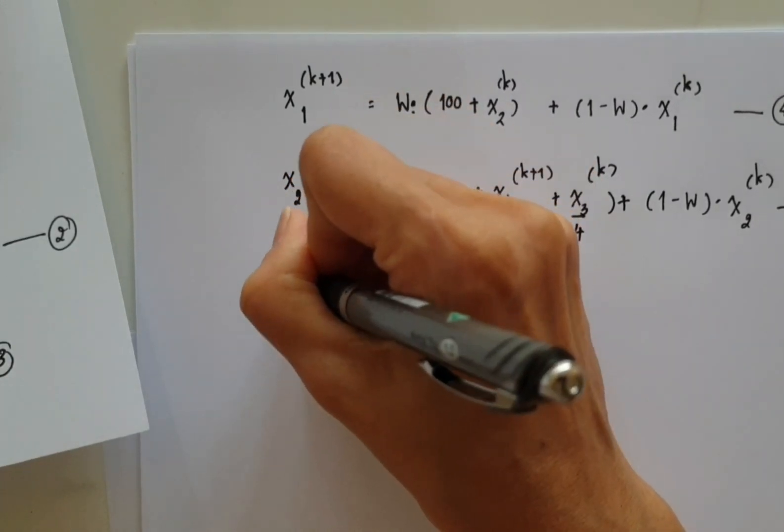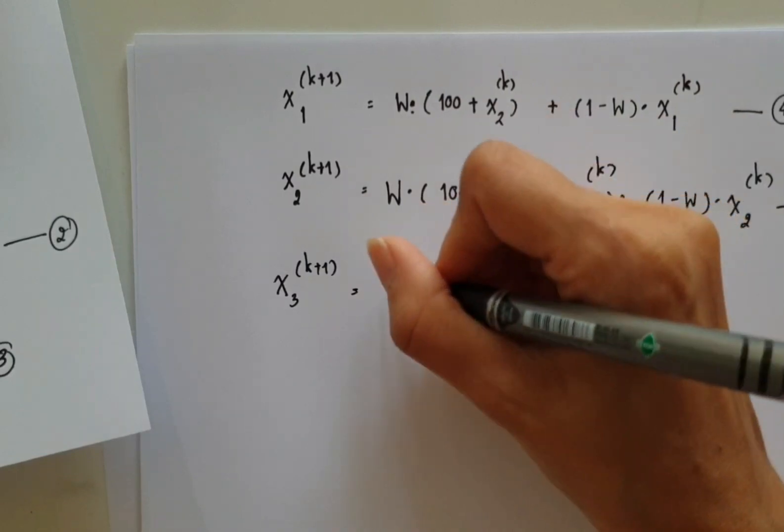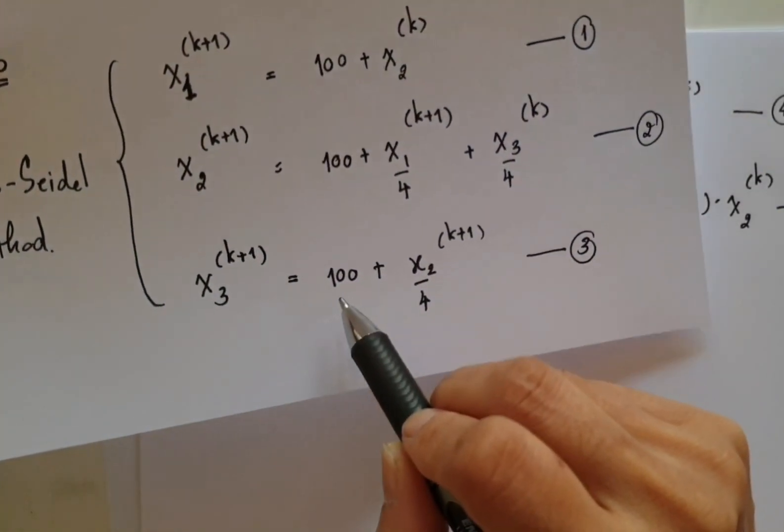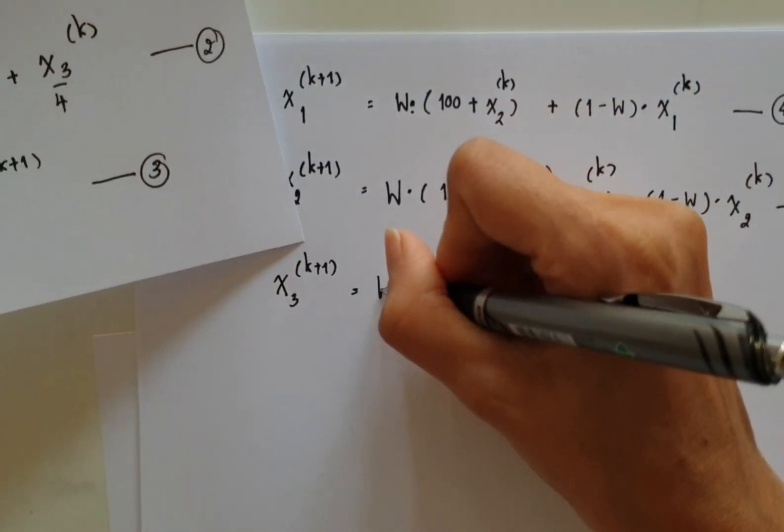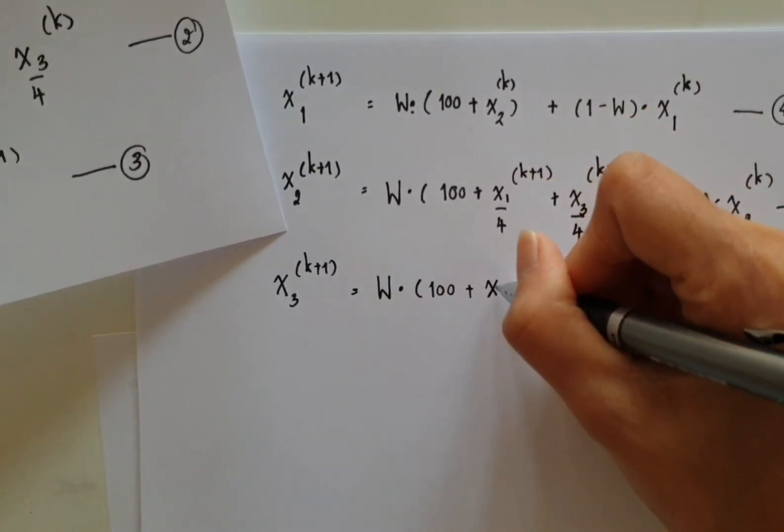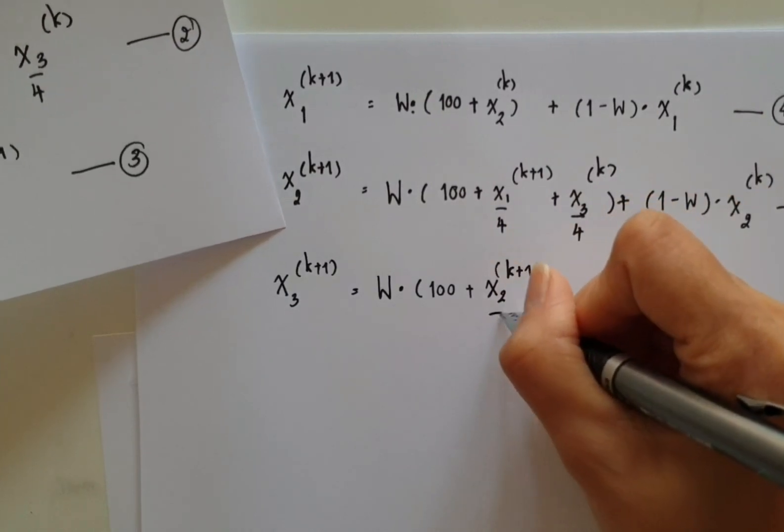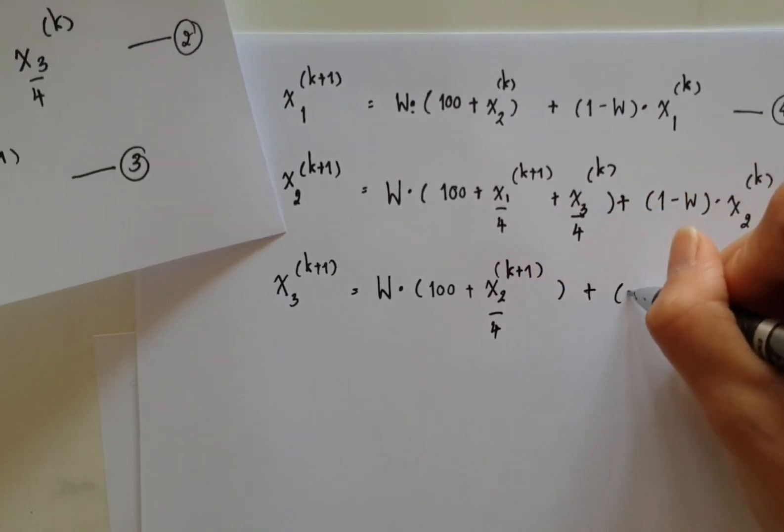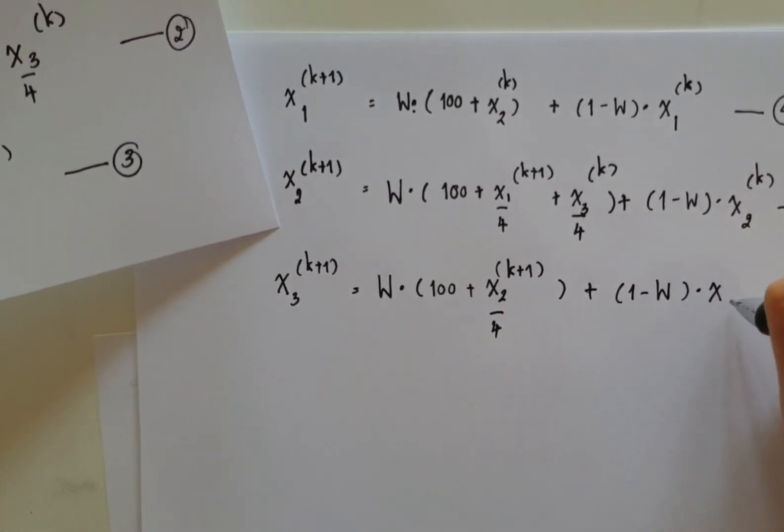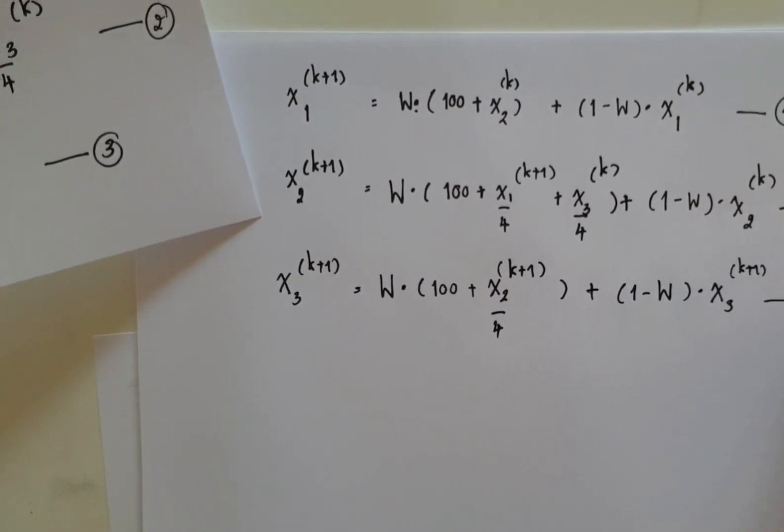And the last updating equation for this example would be W times 100 plus x_2 over 4, plus 1 minus W times x_3 at k. This is equation 6.